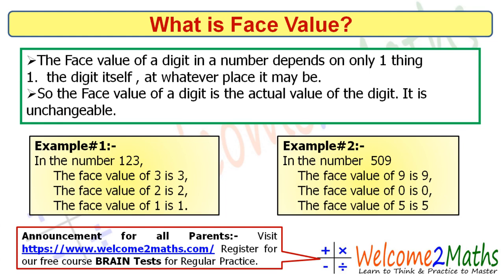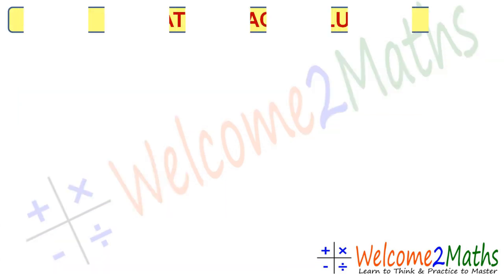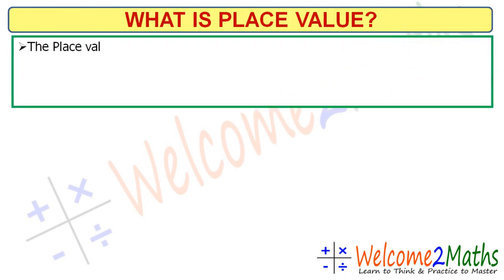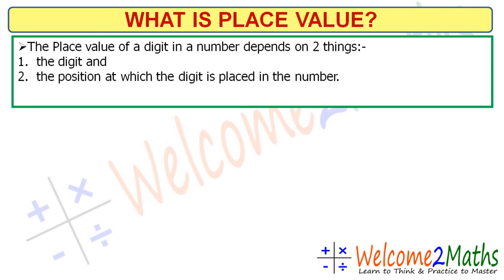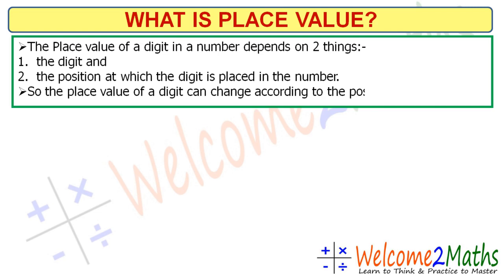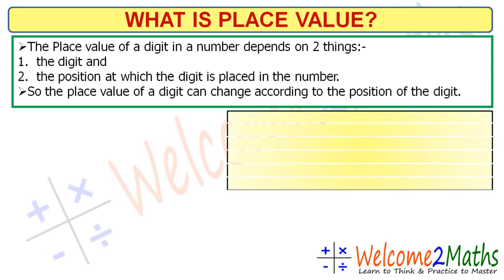Now let's see what is place value. The place value of a digit in a number depends on two things: number one is the digit, and the second is the position or place at which the digit is placed in the number. So the place value of a digit can change according to the position of the digit, like the common man Bahubali and the king Bahubali.